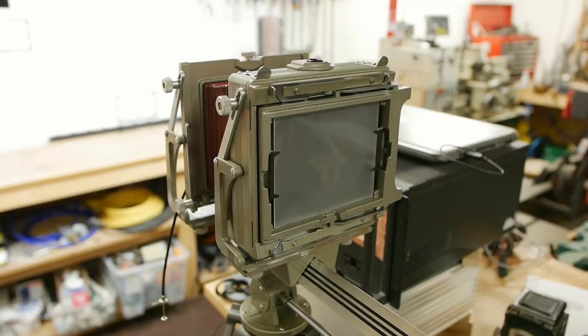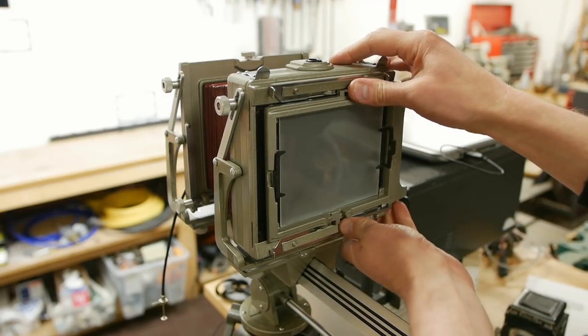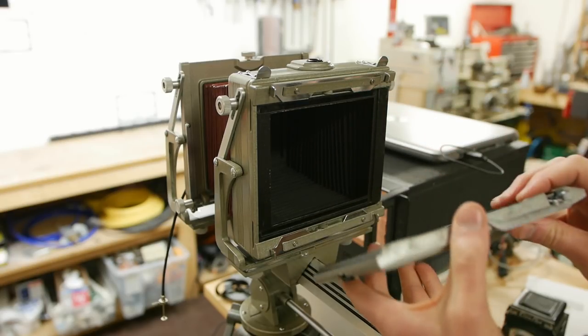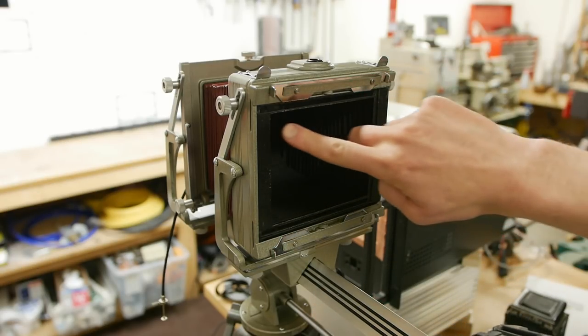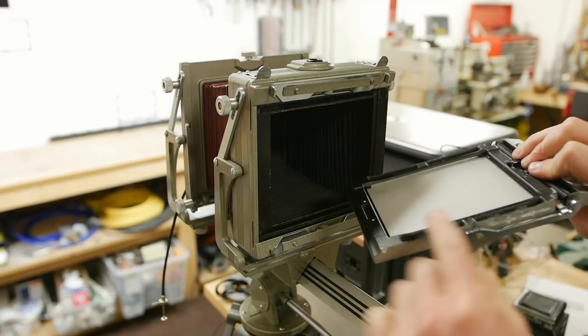The back of the camera is also simple, but quite a bit more fiddly than the front. So it has this ground glass screen on the back, which is how we focus it. And it also comes off.